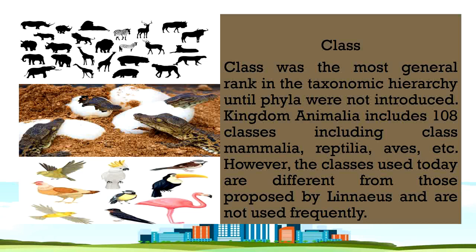Next we have class. A class was the most general rank in the taxonomic hierarchy until phyla were introduced. Kingdom Animalia includes 108 classes, including class Mammalia, Reptilia, Aves, etc. However, the classes used today are different from those proposed by Linnaeus and are not used as frequently. Scientists update information over the years. So we have kingdom, phylum, and then class. Just take a look at the picture for examples of a class.